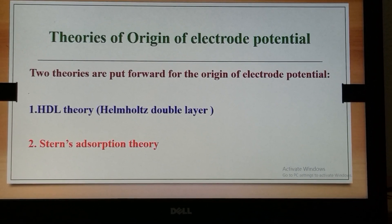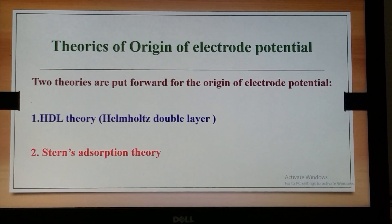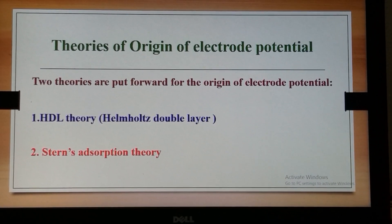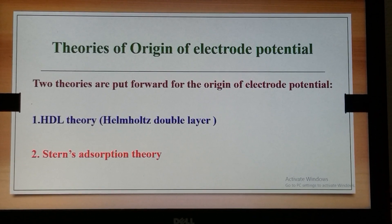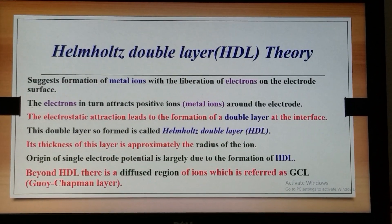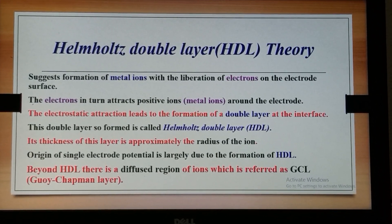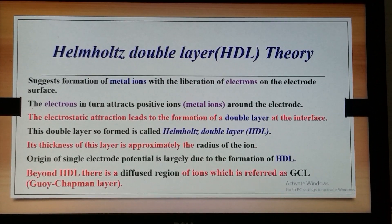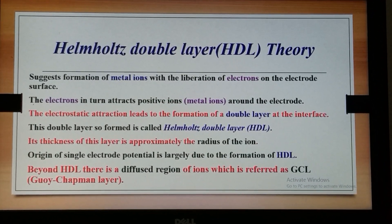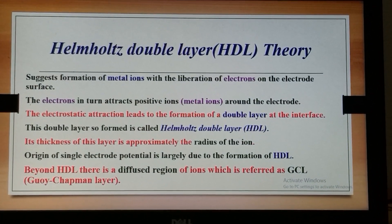There are two theories put forward for the origin of electrode potential: one is the Helmholtz double layer theory (HDL) and the second is Stern's absorption theory. According to the HDL theory, suppose the electrode undergoes oxidation, that is the loss of electrons.